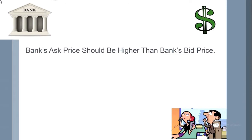The bank's ask price should be higher than the bank's bid price. For example, suppose you're a Bangladeshi citizen and you want to go to the USA, so you have to convert Bangladeshi taka into USD. You go to the bank and you see that to buy one USD, you have to spend 82 Bangladeshi taka.